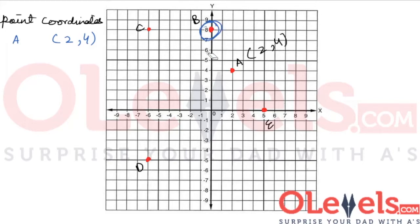Let's look at point B. Point B actually lies on the y-axis. The x value of point B is 0, and the y value, where it touches the y-axis, is 8. So the coordinates of point B are (0, 8), because it has an x value of 0 and a y value of 8.